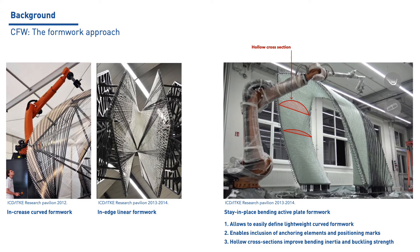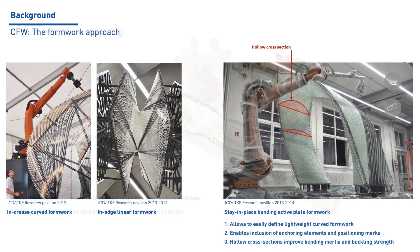It consists of a thin GFRP plate that is bent into shape and further reinforced by winding fibers around it. Once cured, these shape elements serve as a formwork for the subsequent fibers. This approach offers several advantages, as it allows for easy definition of curved formwork, enables the addition of placing marks and fixations by CNC processing the plate, and provides hollow cross-sections that improve the bending inertia and buckling strength of the component.